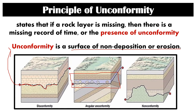Take note, there are three types of unconformity: disconformity, angular unconformity, and non-conformity. With non-conformity, there is a non-sedimentary rock layer — an igneous or metamorphic rock — followed by a sedimentary rock layer. The metamorphic or igneous rock was exposed due to erosion before being covered by a sedimentary rock layer. For angular unconformity, there is a tilting of rock layers followed by a period of non-deposition or erosion, which causes the formation of an angular unconformity.